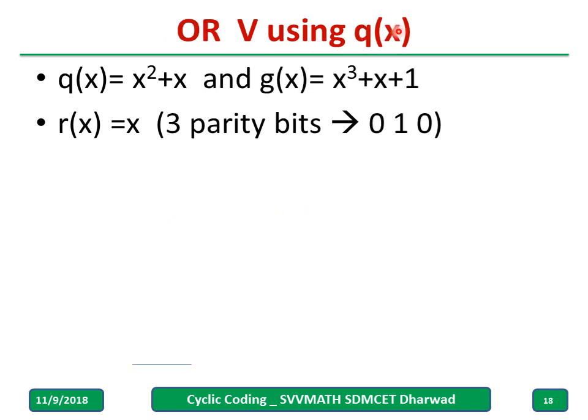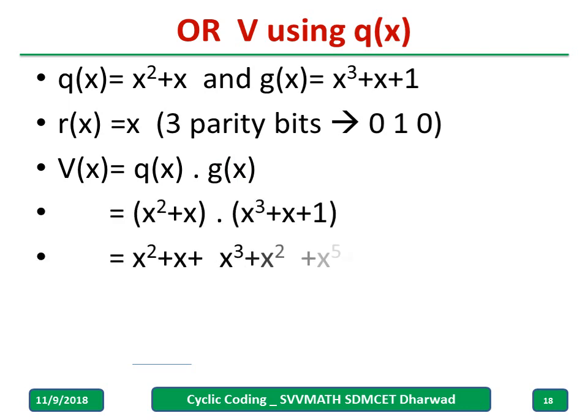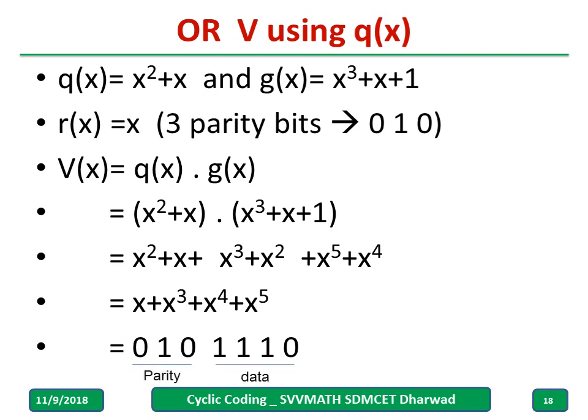And using q(x) how to write? q(x) is X² + X and g(x) is known. What I have to do? r(x) equals X, simply write down q(x) into g(x). q(x) multiply with the g(x), answer what you get polynomial. Simply convert this into zeros and ones after writing the increasing order. You will get directly a codeword. Beginning 3 bits what you are having is 3 parity bits and you can repeat this for another example. Compare this with the previous using r(x). Both answers are same.